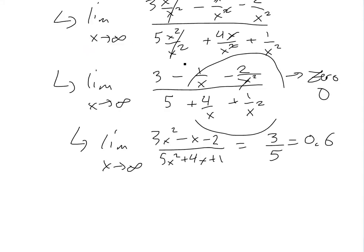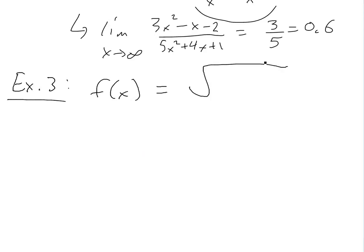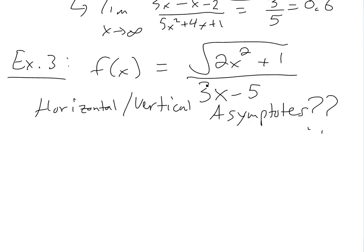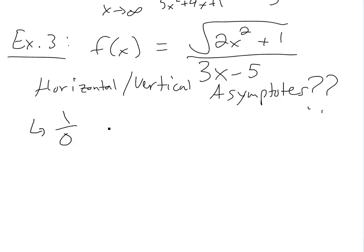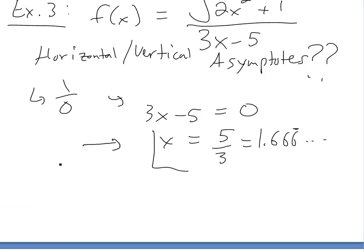Now let's get an even more complicated example. Let's say f(x) equals the square root of 2x² plus 1, all over 3x minus 5. We want to get the horizontal and vertical asymptotes. The easy one is the vertical asymptote — we just look for where the denominator equals 0. So we set 3x minus 5 equal to 0 and solve for x: x equals 5 over 3, which is about 1.66 repeating. So that's the vertical asymptote.